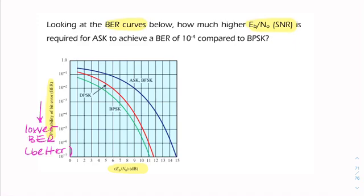So the question is, compare ASK, amplitude shift keying, to binary PSK. So what we're doing is we're comparing this blue curve with the green curve.